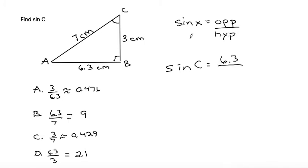And we divide by the hypotenuse. The hypotenuse is always the longest side. It's always also opposite the 90 degree angle. So that would be the side length that is 7 cm.